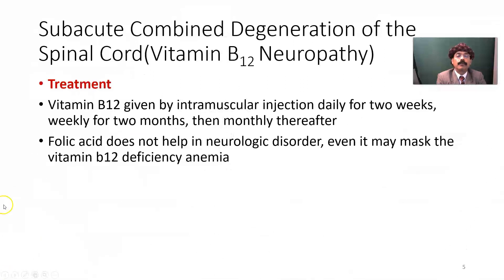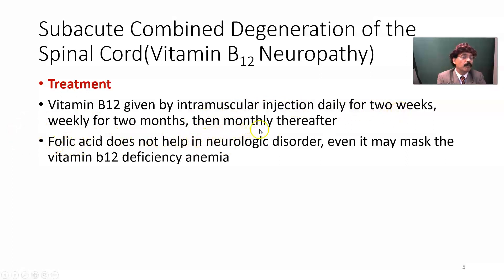How do we treat a patient with vitamin B12 deficiency? It should be replacement therapy. We give vitamin B12 by intramuscular injection daily for two weeks, weekly for two months, then monthly thereafter. Folic acid does not help in neurological disorders and may even mask vitamin B12 deficiency anemia.